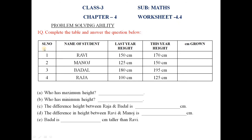Worksheet 4: Problem Solving Ability. Complete the table and answer the questions below. The table has Robbie, Monos, Badal, and Raja with last year's height and this year's height. Robbie: last year 150 cm, this year 170 cm — difference is 20 cm. Monos: 125 cm to 160 cm — difference is 25 cm. Badal: 180 cm to 195 cm — difference is 15 cm.